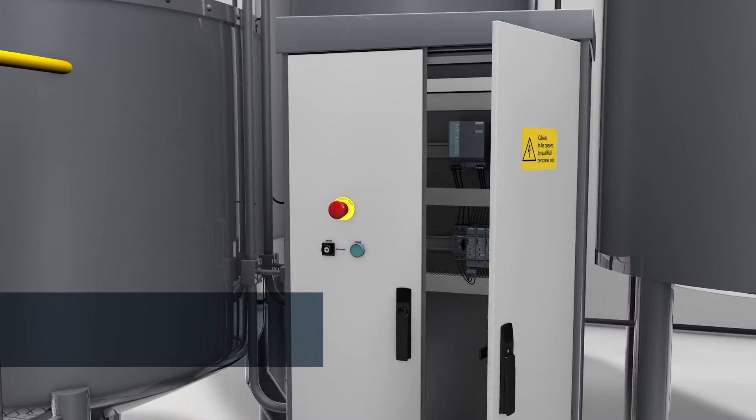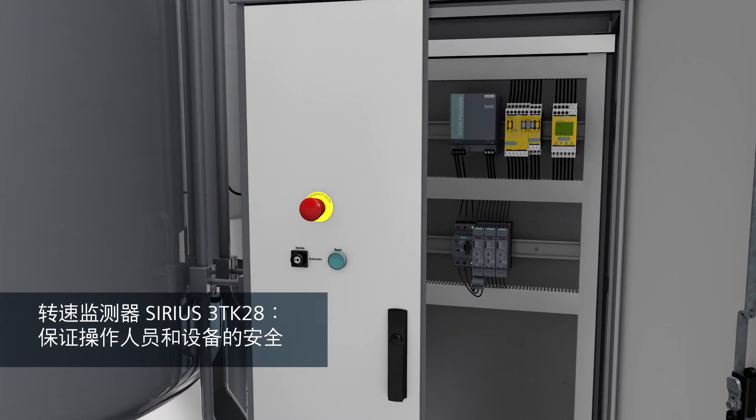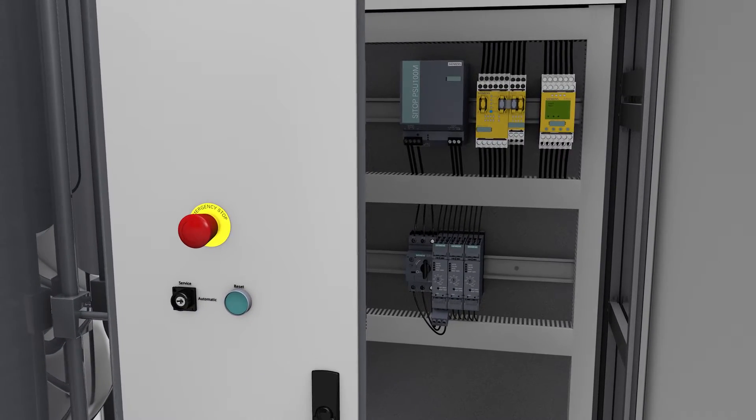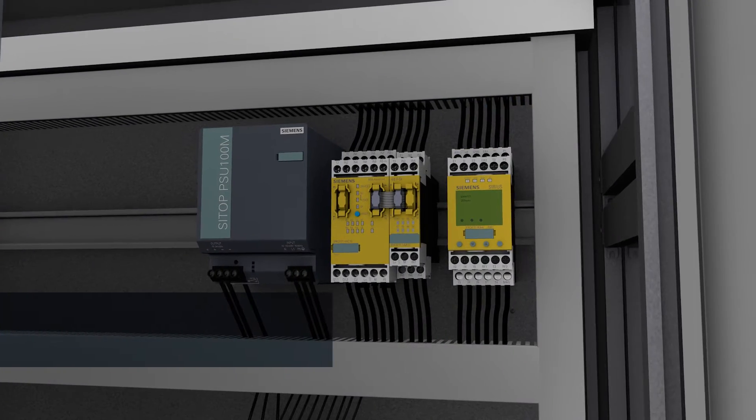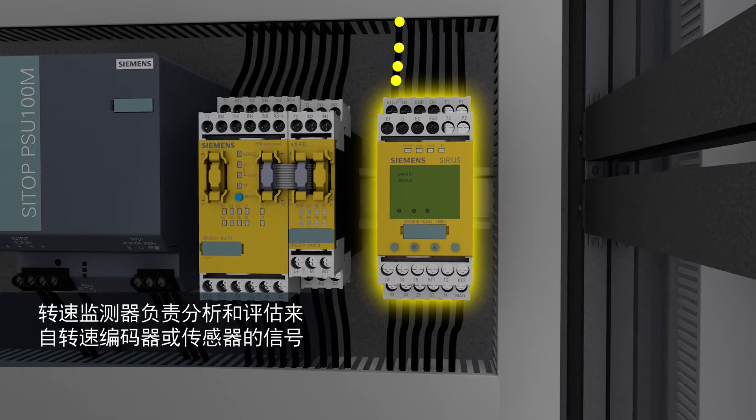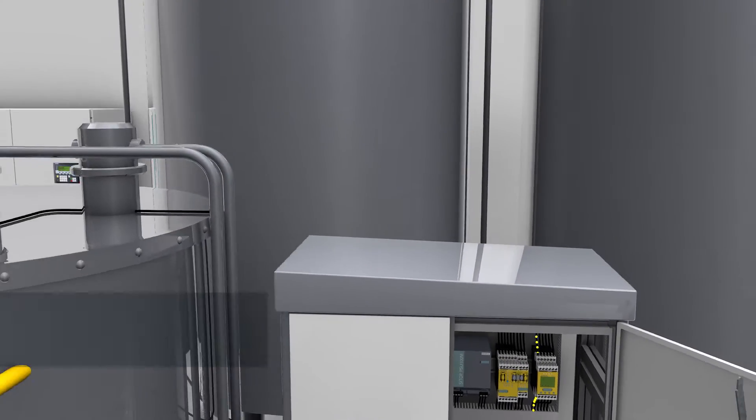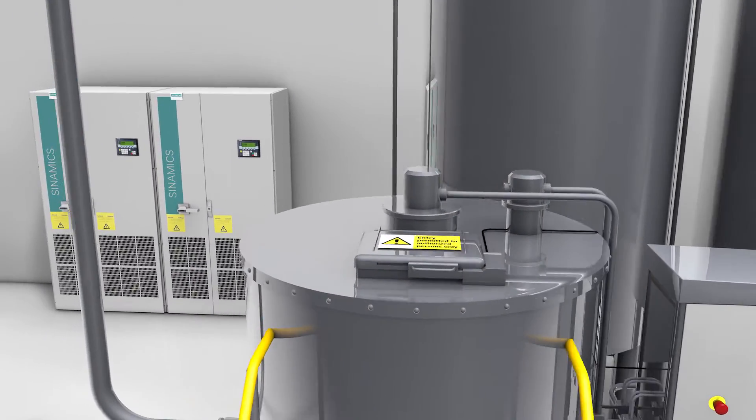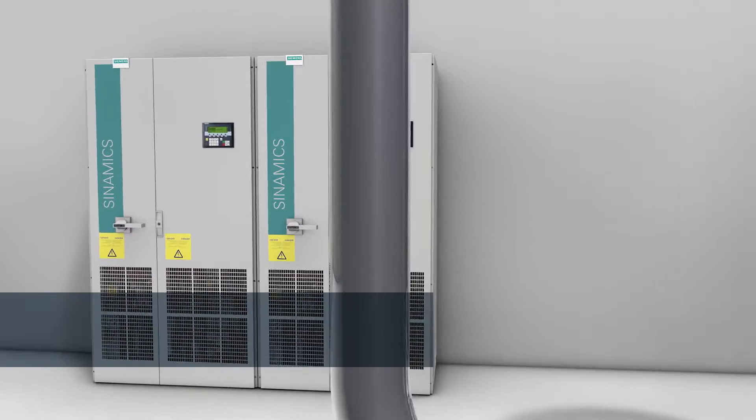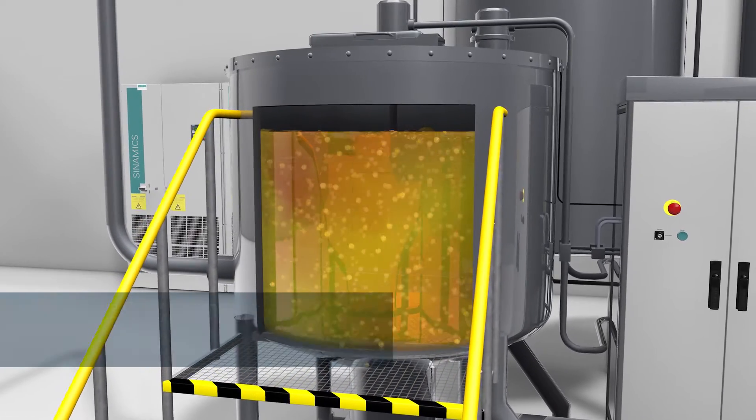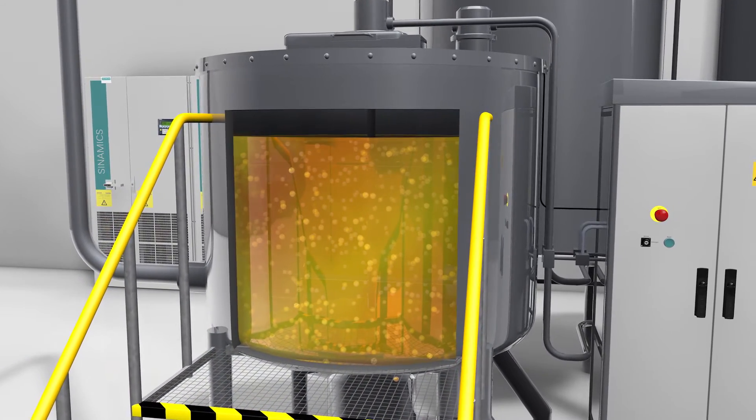The blender speed is monitored by a Sirius 3TK28 speed monitor. If, for example, the speed of the agitator increases to a point that must not be exceeded, the speed monitor will evaluate signals from the speed encoder or sensor and causes the Sinamics G150 frequency converter to shut down. The G150 triggers STO safe torque off and the blender goes to the safe state. The drive can no longer supply torque generating forces and the blender remains at a safe standstill.